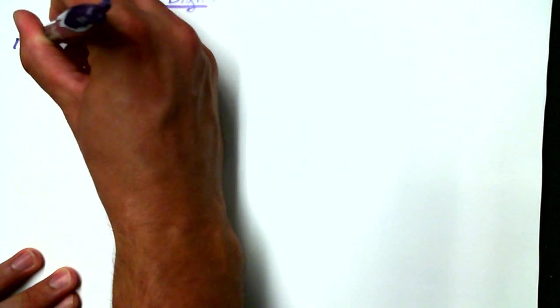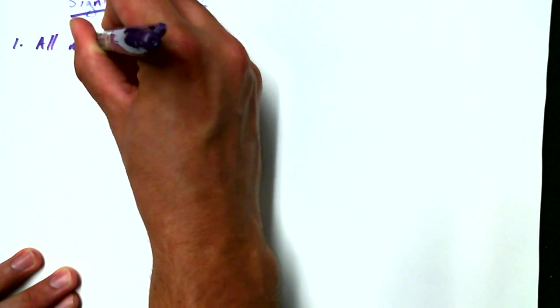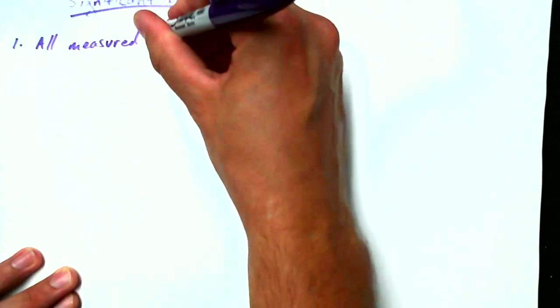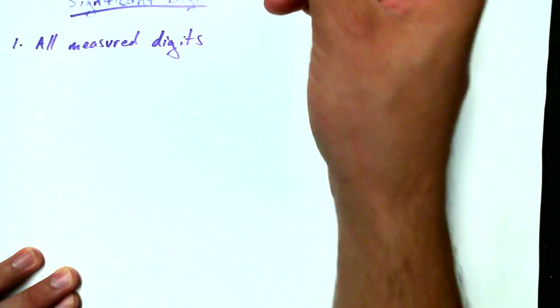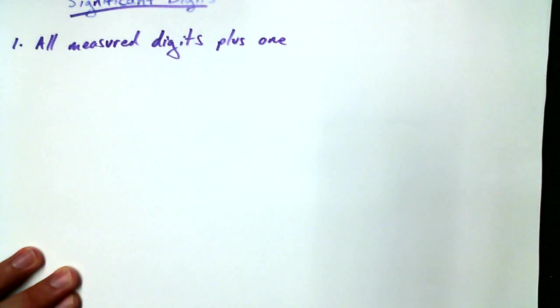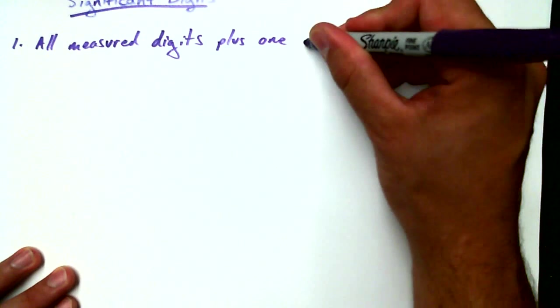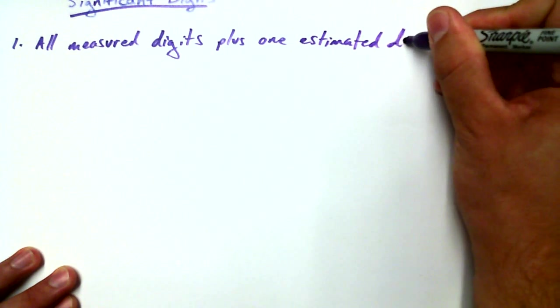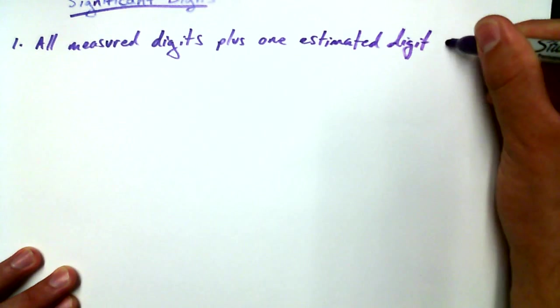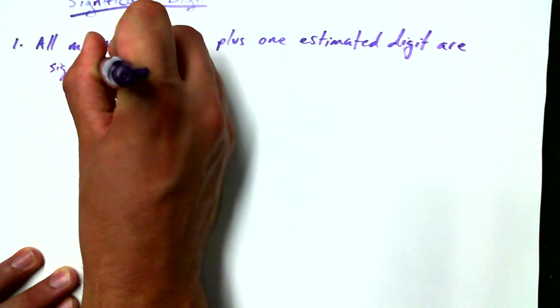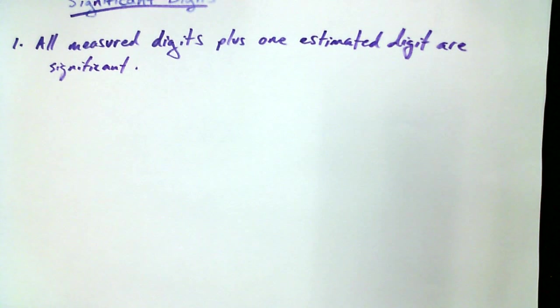So the first rule: all measured digits, or all measured digits I should say, plus one estimated digit are significant. That sounds a little bit maybe not very self-explanatory. Let me show you what I mean by that.